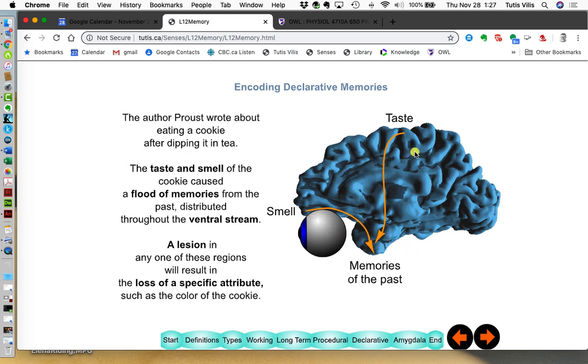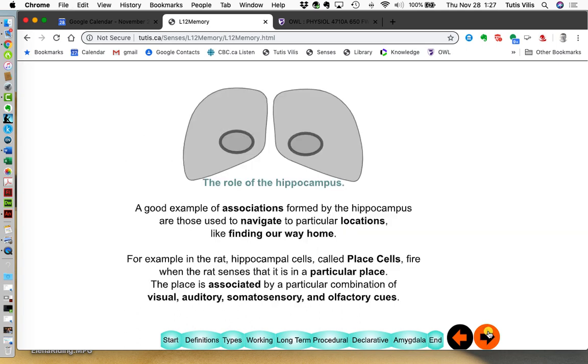And so when you often just smell or taste something, it connects you to all kinds of memories from the past. And a lesion of one of these things, you lose, you can lose a particular attribute of that memory. It also, it's a good example of these associations, a good example of that is remembering all the places that you need, locations to find your way home.